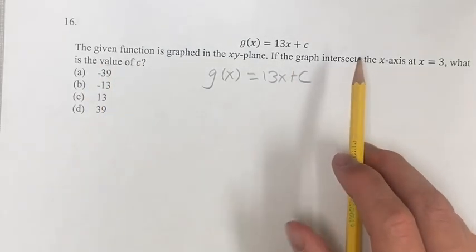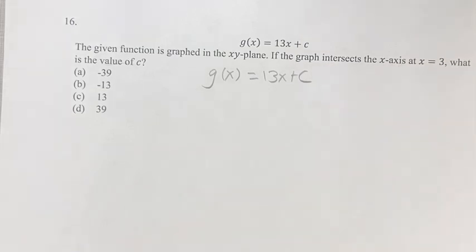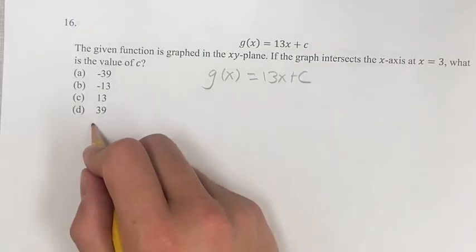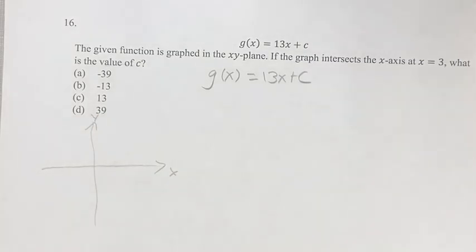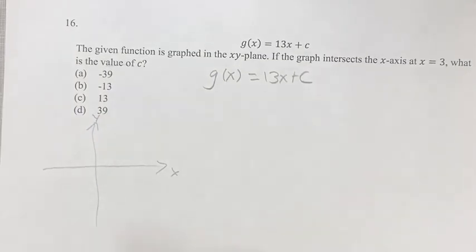We're given the information that the graph intersects the x-axis at x equals 3. So what does that mean? For any curve in the xy-plane, just draw some random function. Pretend that actually follows the vertical line test, don't worry about it.